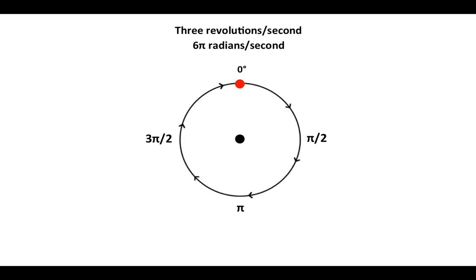Three revolutions per second would be 6π radians per second, and here we go. Three revolutions.